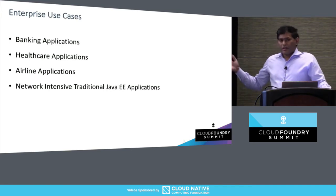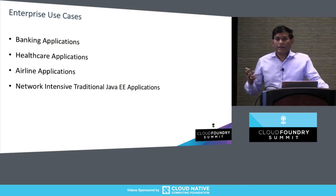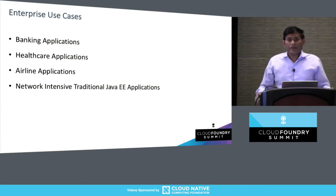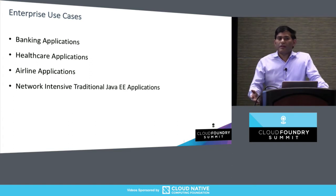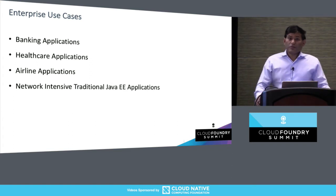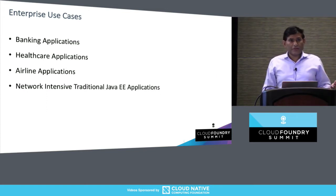We'll talk about some of the projects under Cloud Foundry that are actually trying to work with both Kubernetes and Cloud Foundry, and of course Istio — and then we'll see whether we can combine those three and see what the future looks like. Some of the applications we have thoroughly investigated are banking, healthcare, airlines, and also some legacy traditional Java EE applications, because most customers already invested in Java EE-type middleware would like to get to cloud — Cloud Foundry and Kubernetes. So what are the performance and scalability characteristics of these applications when you move them to these platforms?